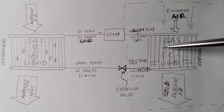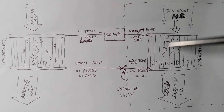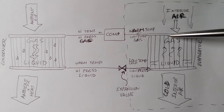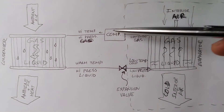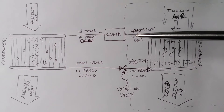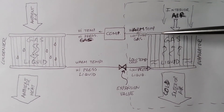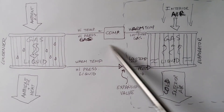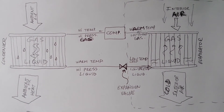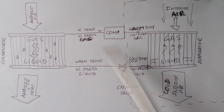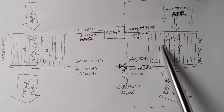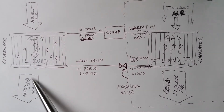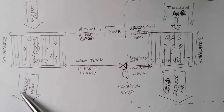As the liquid changes into a gas it draws heat into itself, and because of that added heat it changes into a gas and gets sucked back to the compressor. You're taking heat away from the interior space along with the gas, compressing it, and dumping it overboard at the condenser. The gas absorbs heat from your interior space and carries it outside.